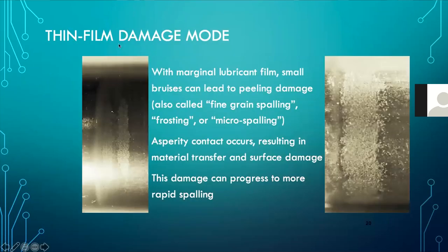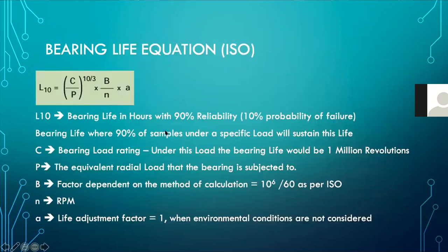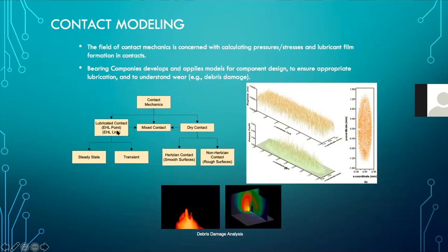With marginal lubricant film, small bruises occur, which ultimately result in peeling of the surface — asperity contact, material transfer, and surface damage. Once started, this damage can propagate into rapid spalling of the bearing. Many bearing companies do contact modeling based on lubricated contacts, mixed contacts, and dry contact. Different types of states are calculated for bearing modeling. Different bearing companies have developed and applied models for component design to ensure appropriate lubrication and understand how wear or debris damage may occur in the bearing.